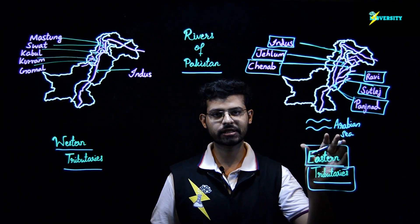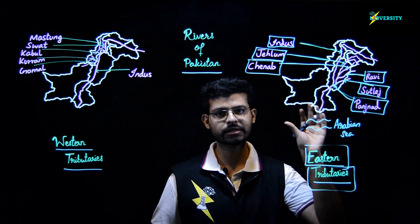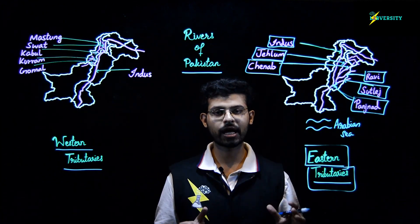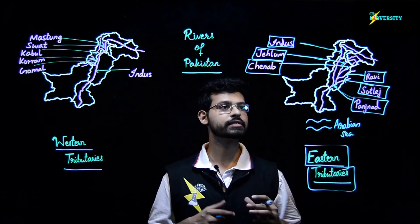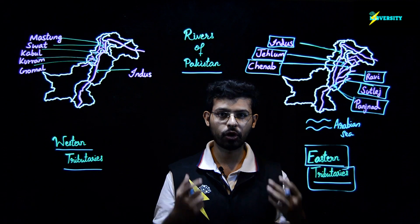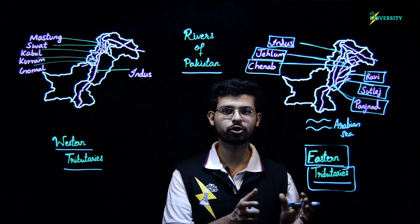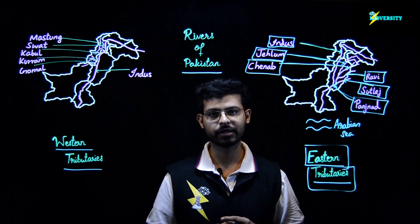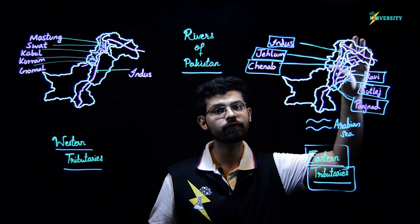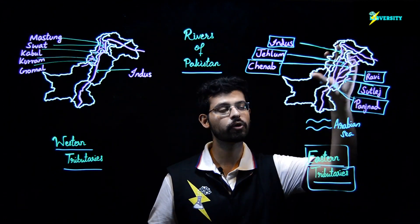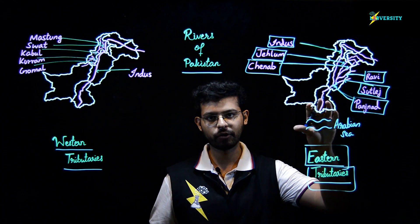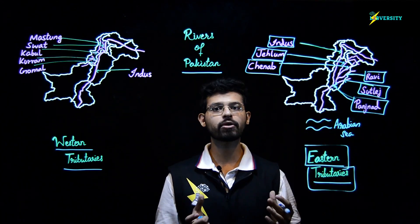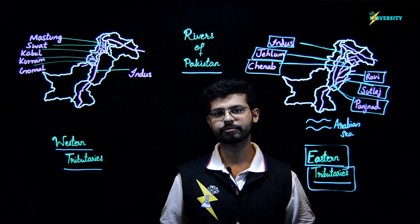The eastern tributaries of River Indus are very long and wide rivers. They have more volume of water in them as compared to the western tributaries of River Indus. Moreover, they drain a very large area — you can see all of Punjab and Sindh being covered. We can imagine the length of the area that they are covering.